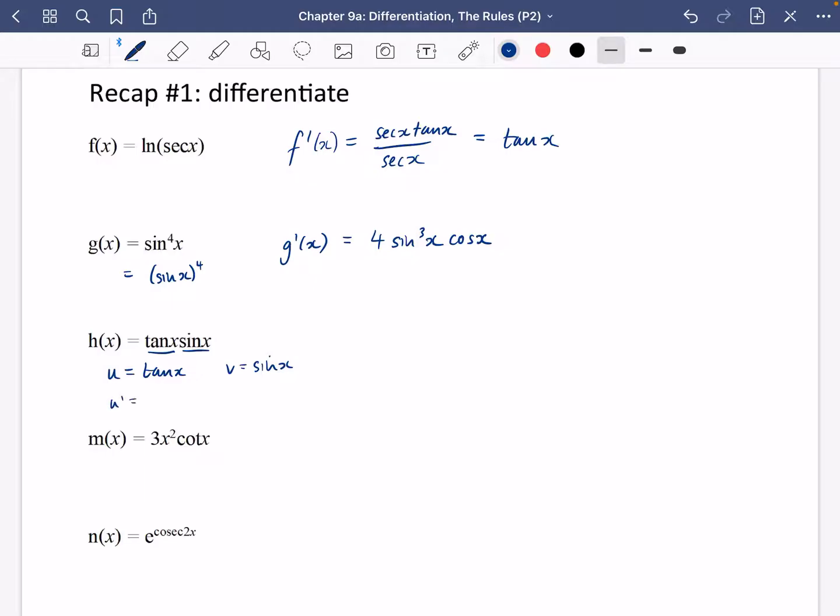Well, tan differentiates to sec squared x and sin x differentiates to cos x, so product rule means you're going to have that cross shape that you've got there. So h dash x is going to be tan x cos x plus sin x sec squared x.